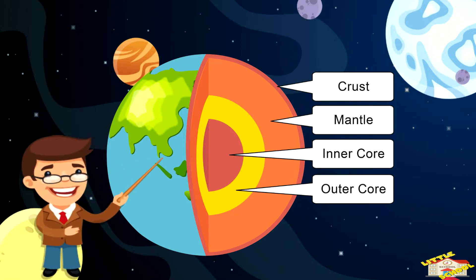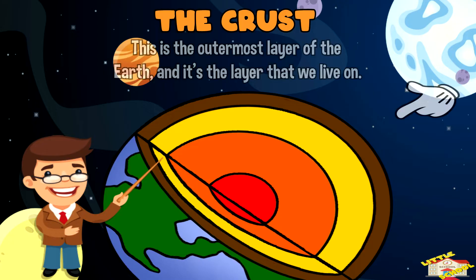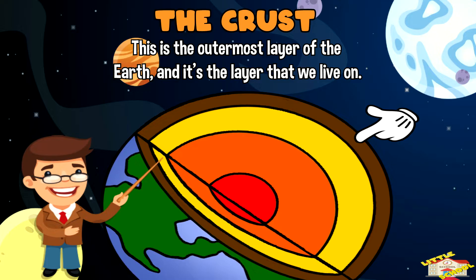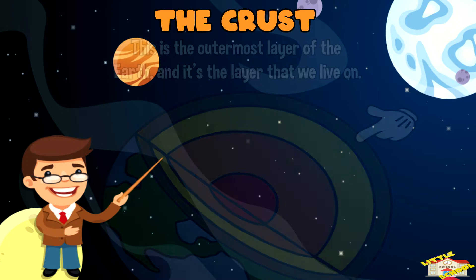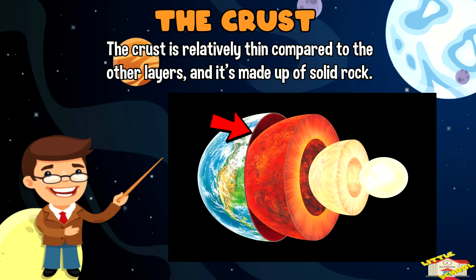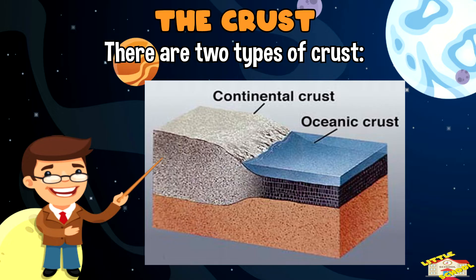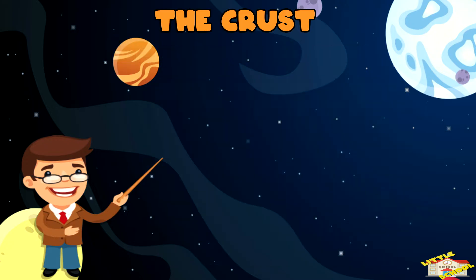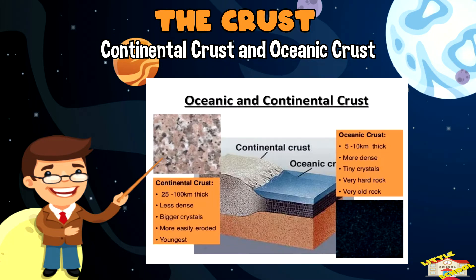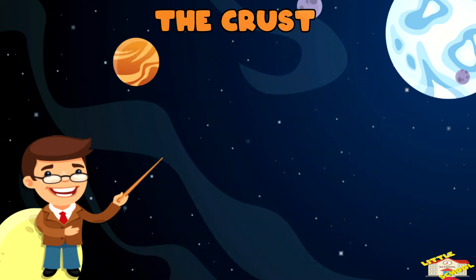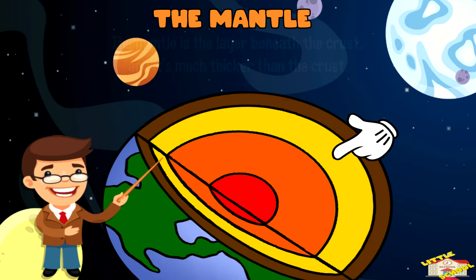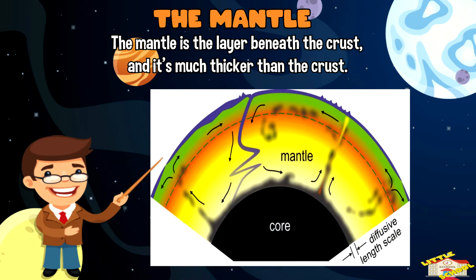The crust is the outermost layer of the Earth and it's the layer that we all live on. The crust is relatively thin compared to the other layers and it's made up of solid rock. There are two types of crust: continental crust, which makes up the continents, and oceanic crust, which makes up the ocean floor.